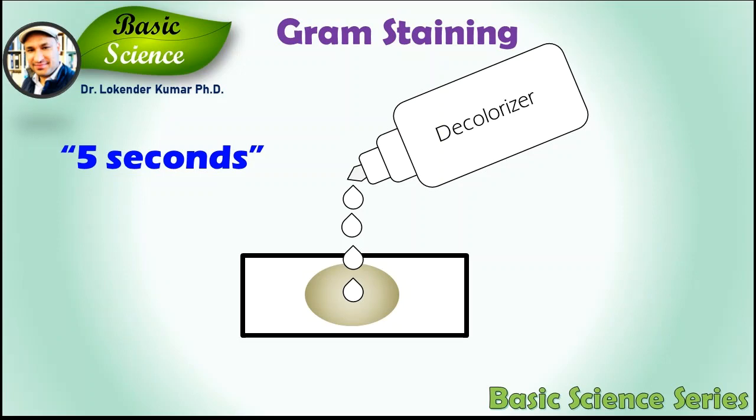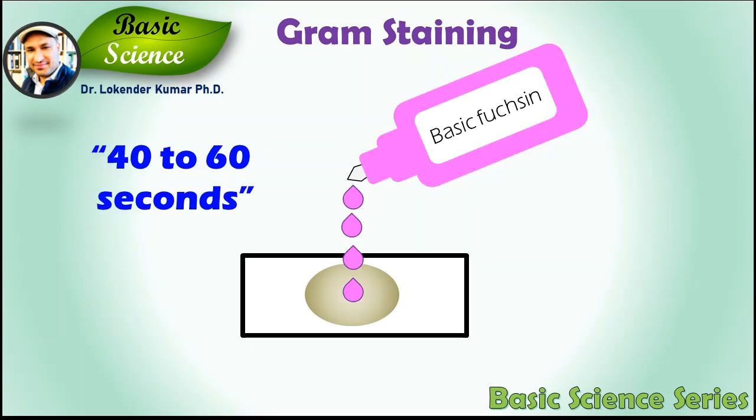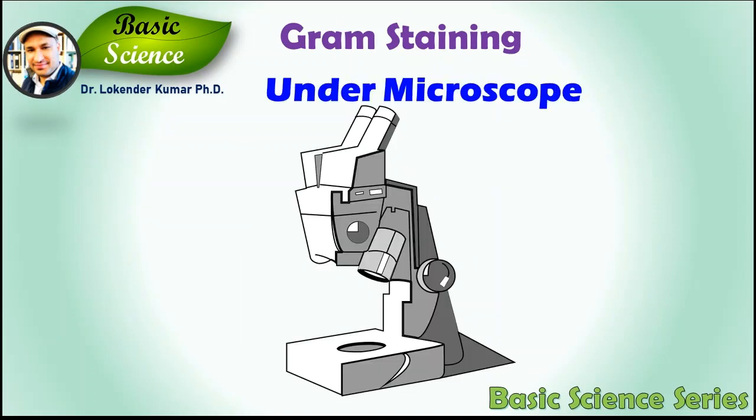Further delay will cause decolorization of the gram-positive cells and the purpose of the staining will be defeated. Counter stain with another staining solution known as basic fuchsin solution for 40 to 60 seconds. Wash off the solution with water. Alternatively, the slide may be shaken to remove most of the water and air dried.